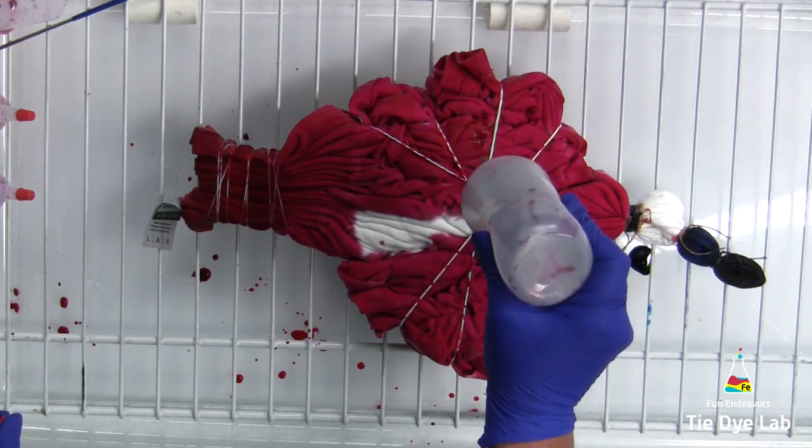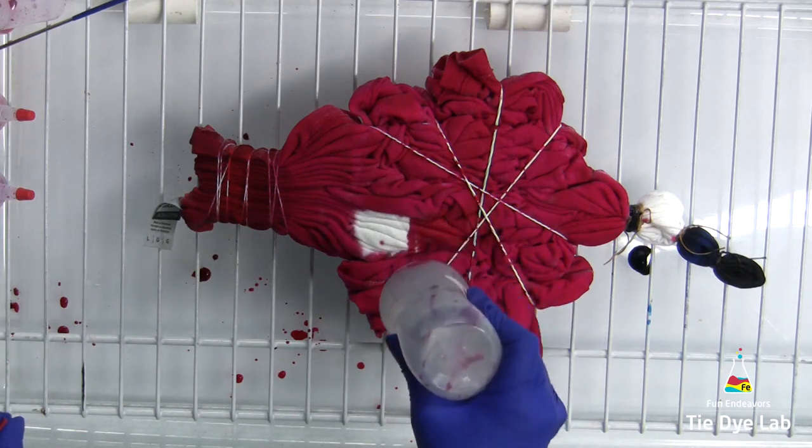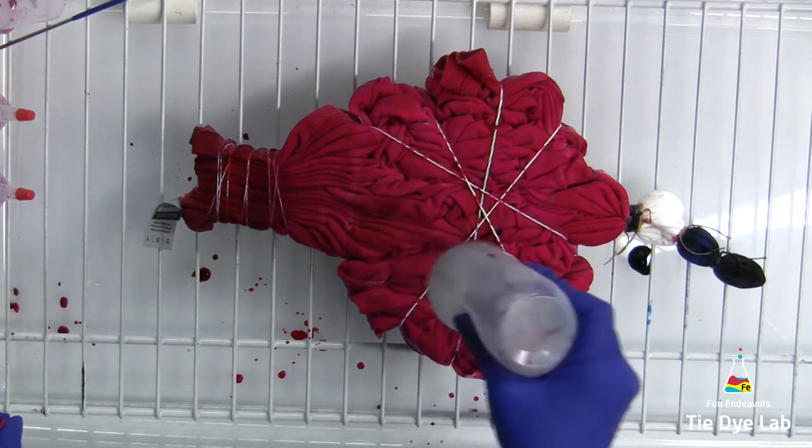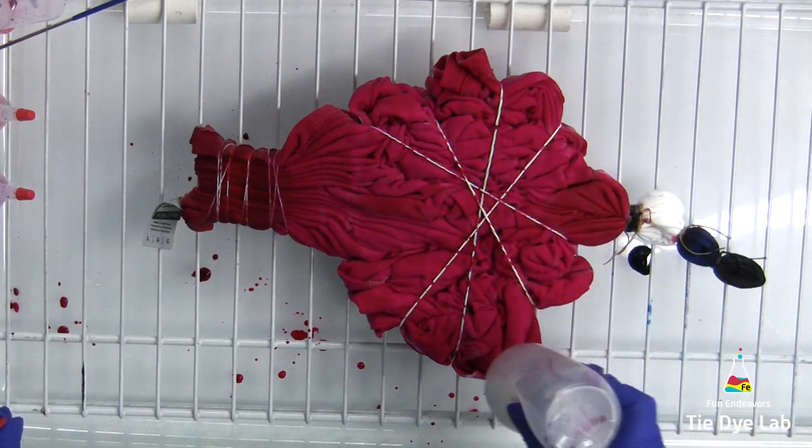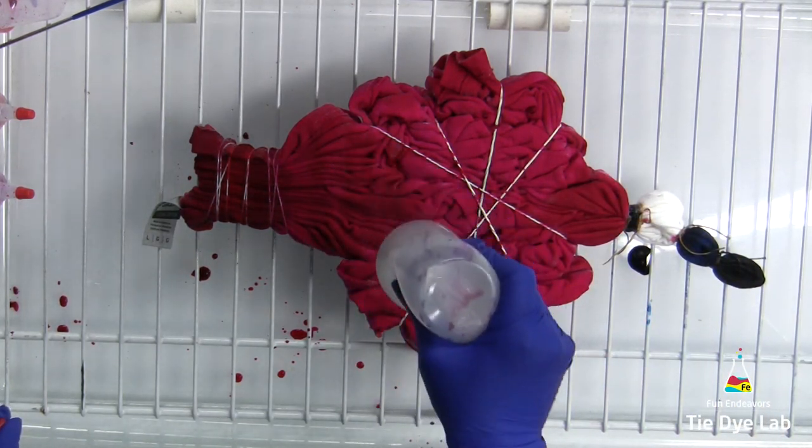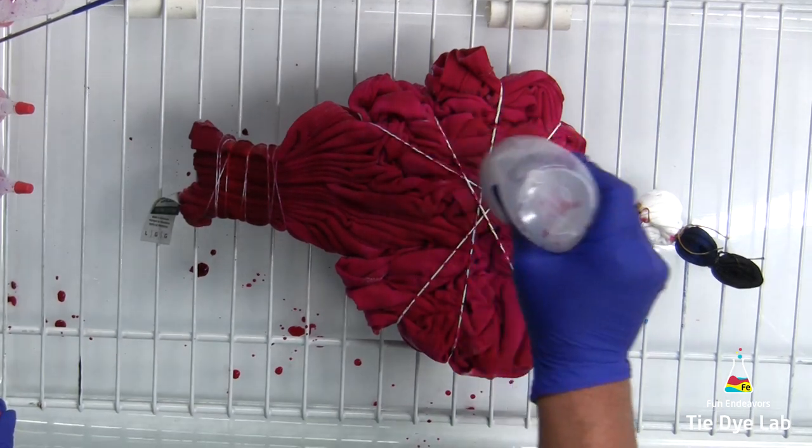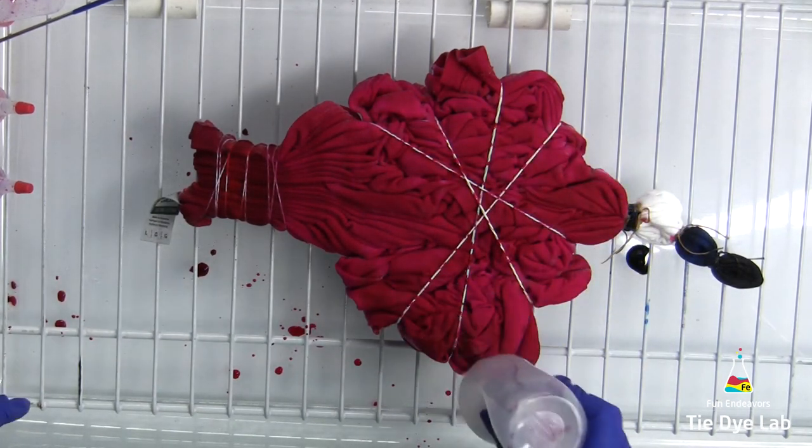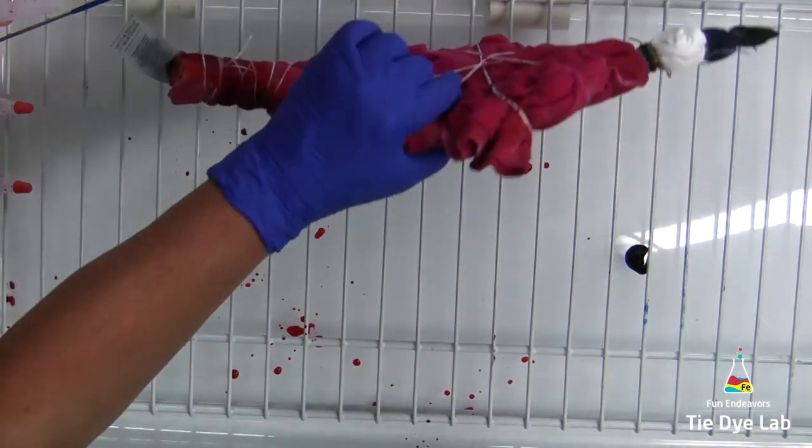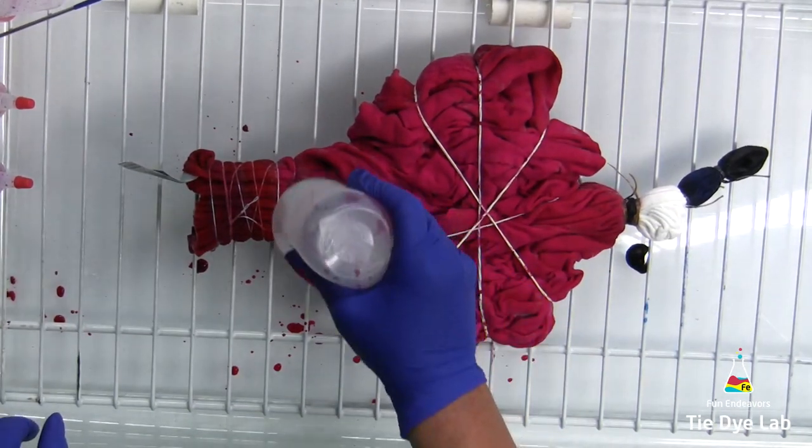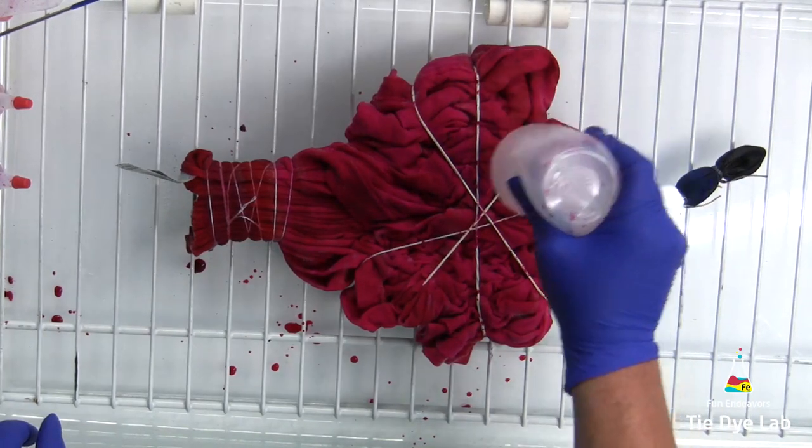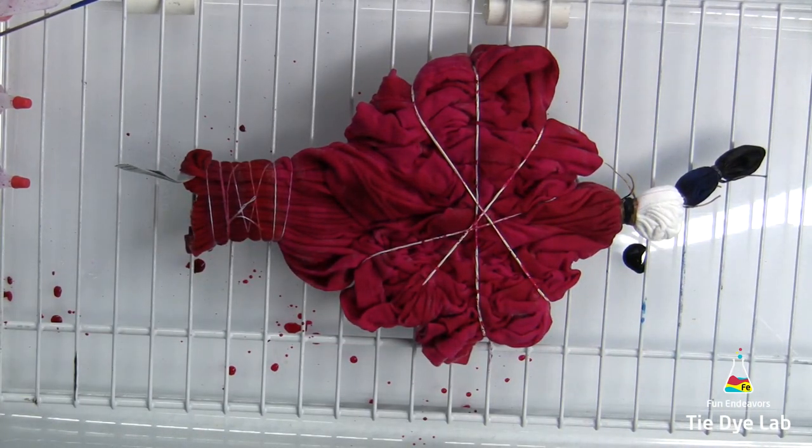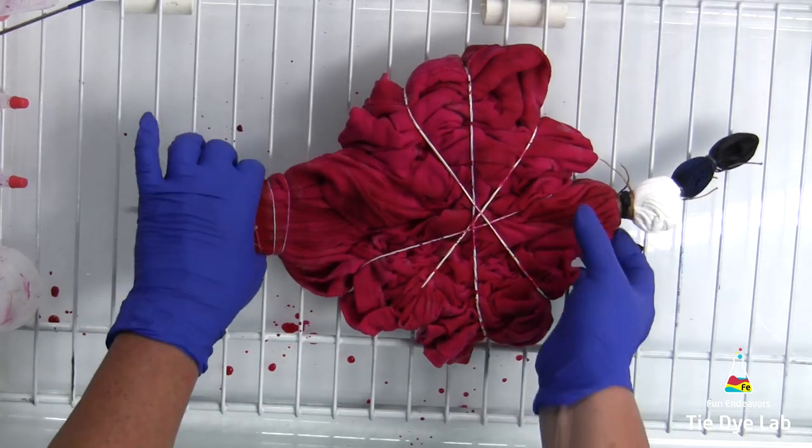After I'm finished applying the dye, I have a tub that has a rack down in the bottom of it so that any excess dye can just drain through. I'm going to put the shirt on top of that rack, put the lid on the tub, and put it outside for a few hours. Then I'm going to bring it in, let it continue to process for another 24 hours, and rinse it out.